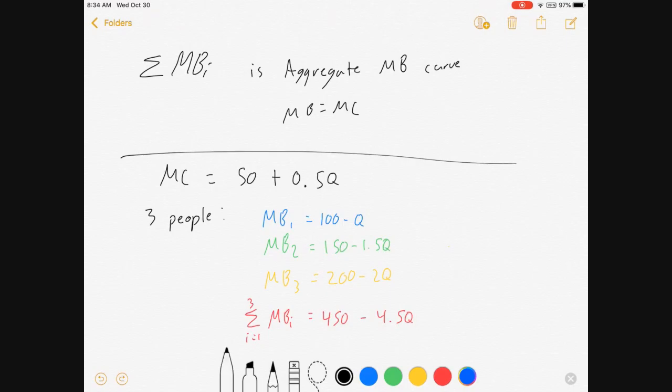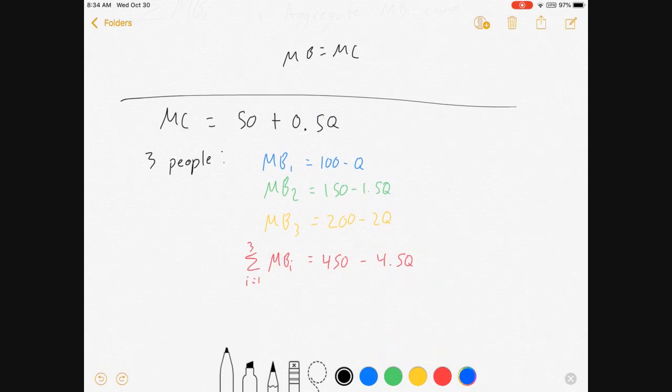So we've got a marginal benefit function for society and we've got a marginal cost function for society. Let's graph it and take a look here. Quantity on that axis, marginal benefits on that axis.